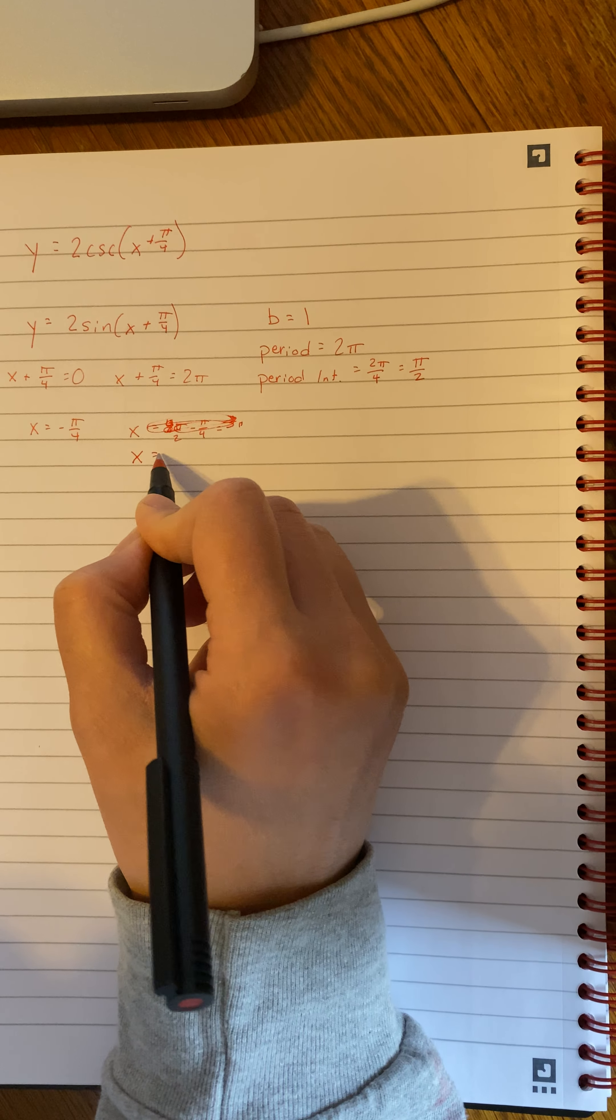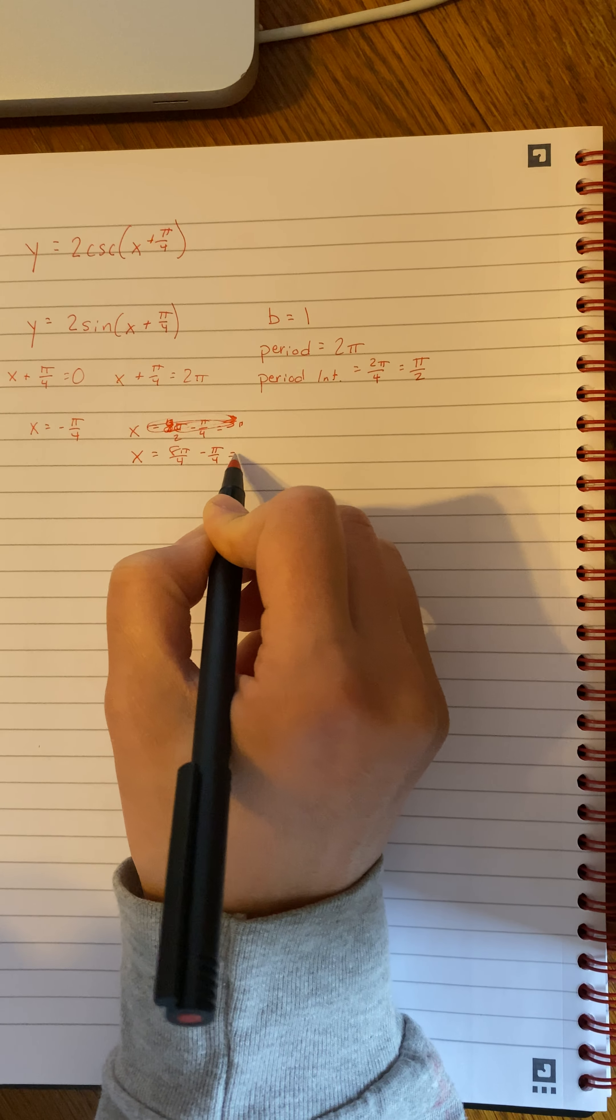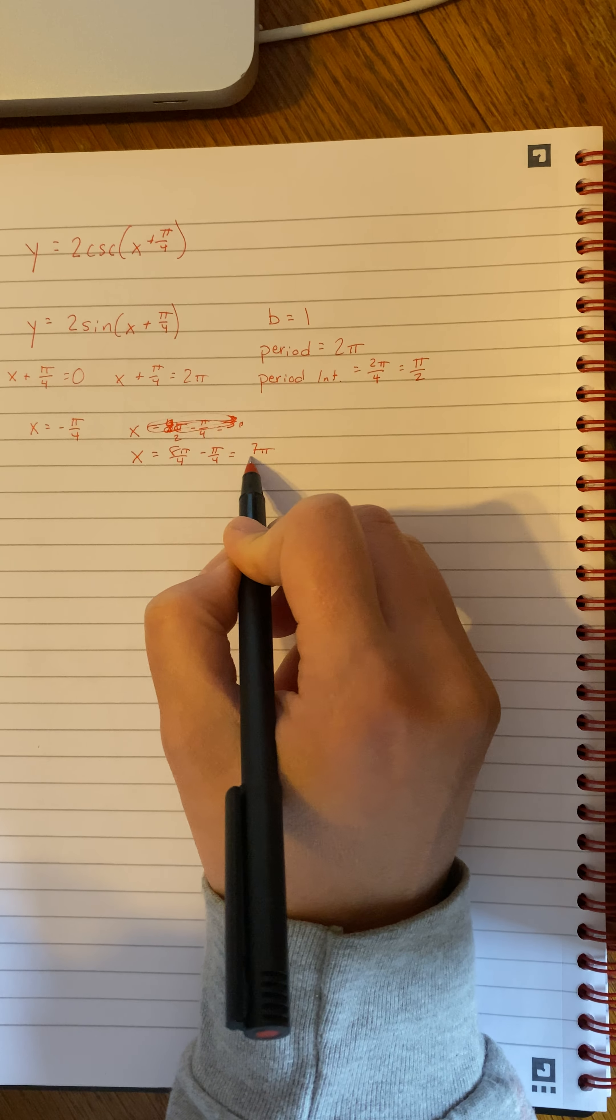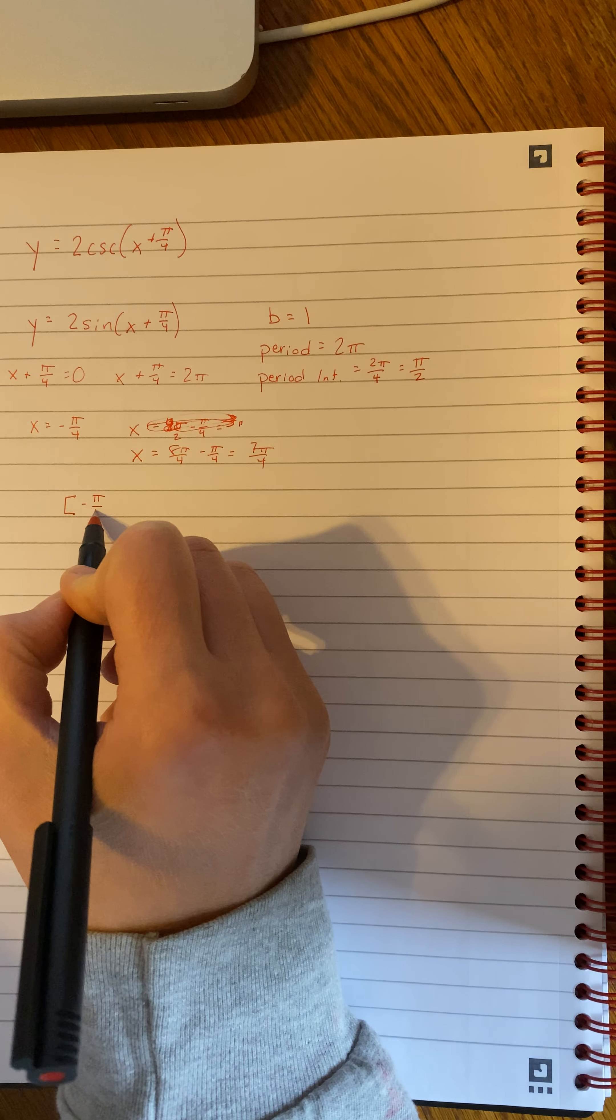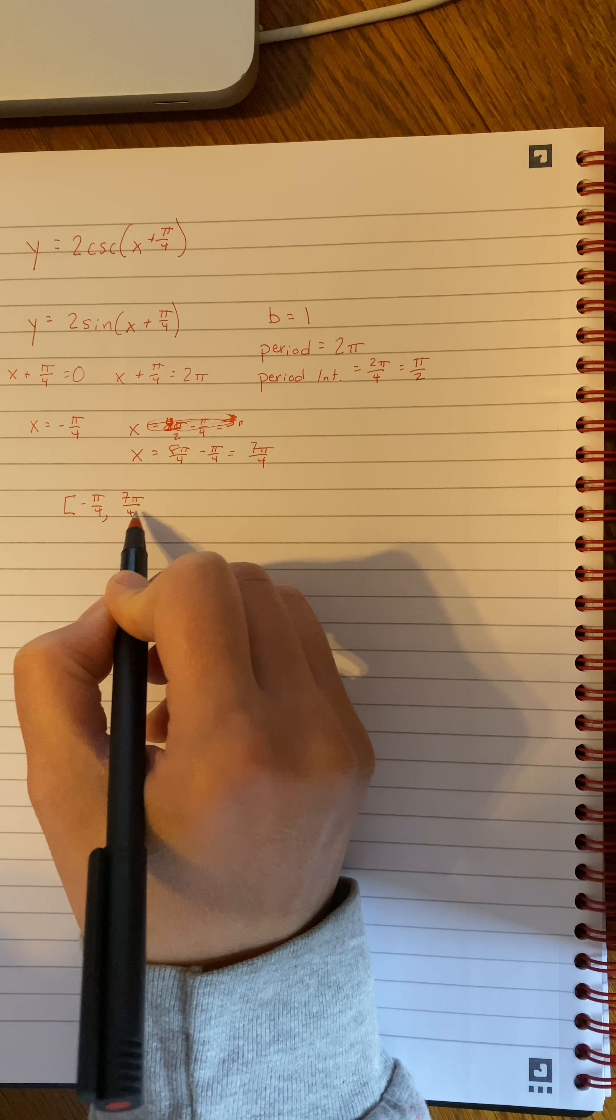Sorry, brain fart. So 8 pi over 4 minus pi over 4, that would equal 7 pi over 4. Sorry about that. So our interval here, negative pi over 4 is the start of our cycle, and our cycle will end at 7 pi over 4.